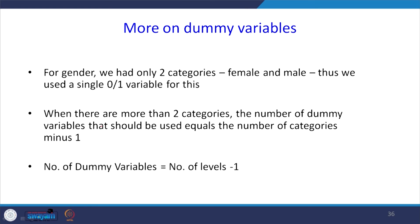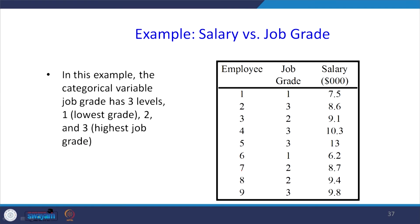Sometimes there may be more than one dummy variable. In our gender problem we had only two levels, so we used a single 0/1 dummy variable. When there are more than two categories, the number of dummy variables equals the number of categories minus 1. For example, if a categorical variable job grade has three levels — 1 (lowest), 2 (medium), 3 (highest) — we need 3−1 = 2 dummy variables.